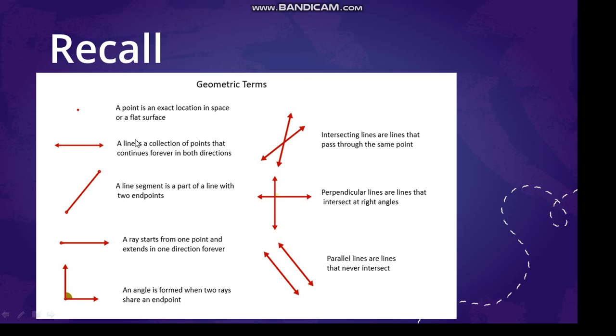Now this is a line. A line is made by two points, right? So a line is a collection of points that continues forever in both directions. So it doesn't have an ending point or a starting point. You can continue or extend the line from both directions.